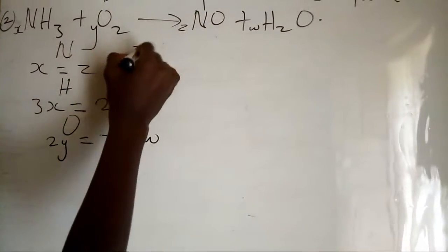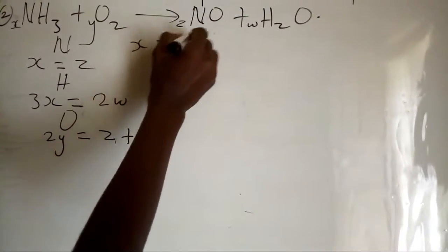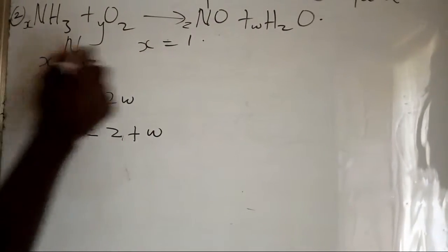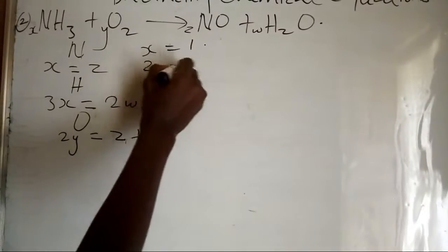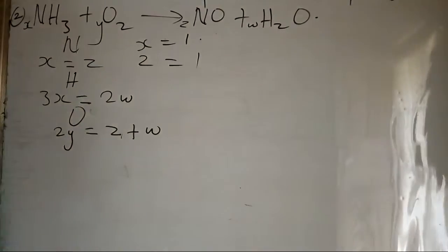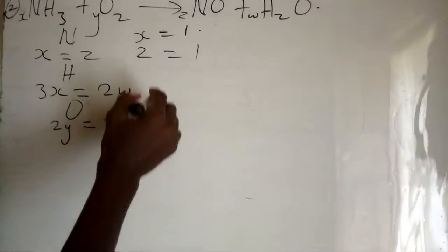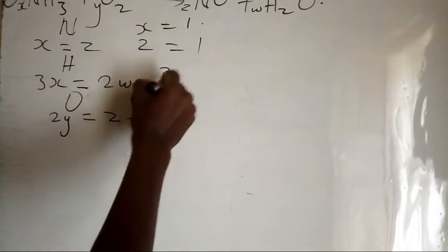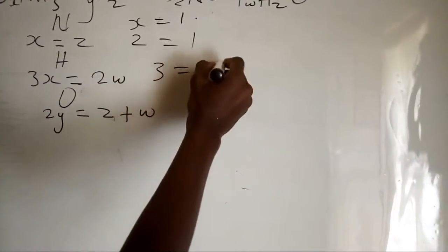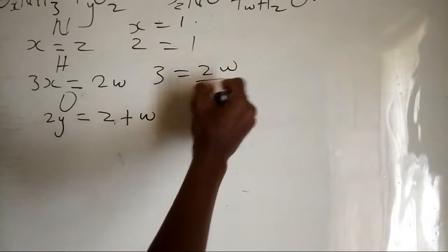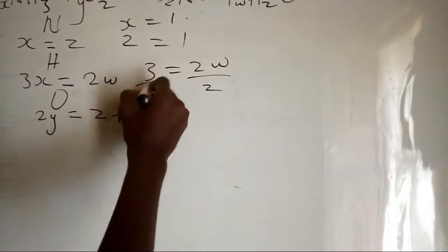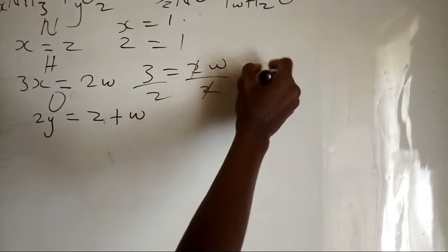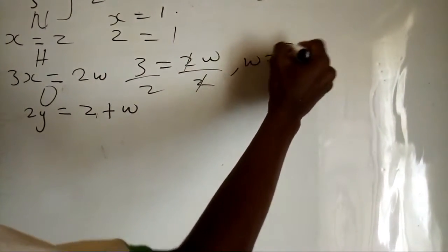We always set x equal to one. If x equals one, then z also equals one. For hydrogen: 3 times 1 equals 2w, so 3 equals 2w, and w equals three over two.